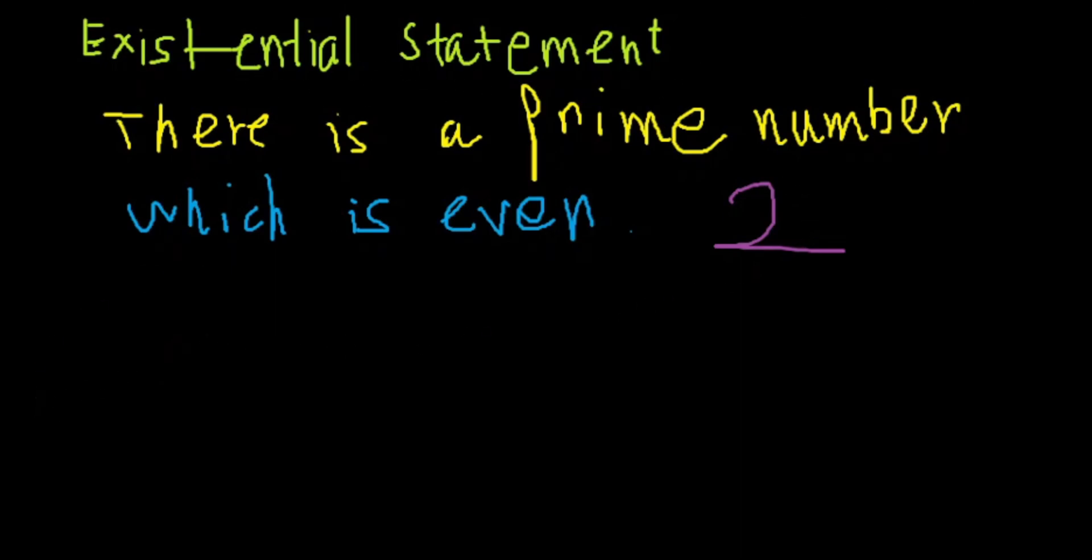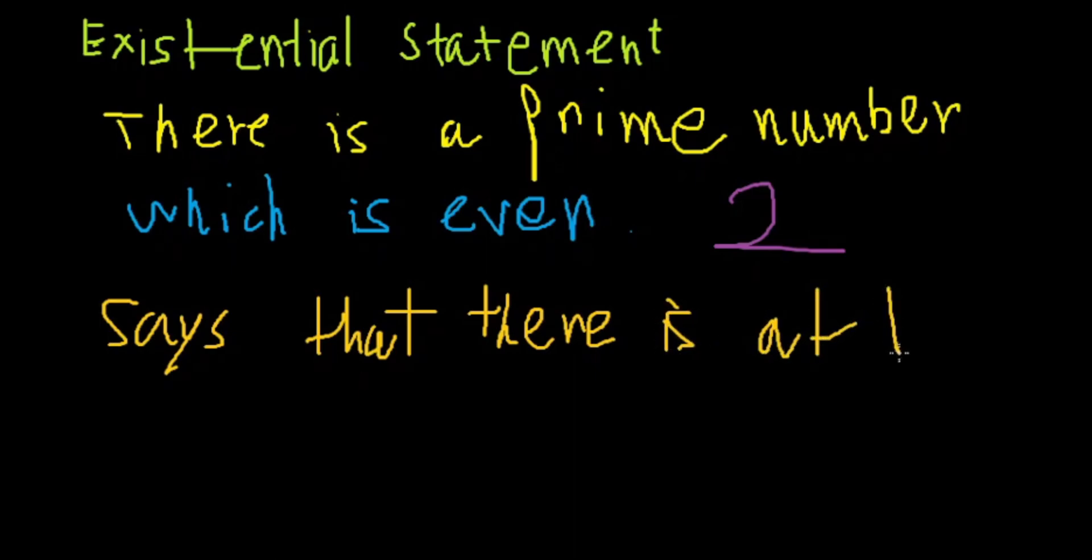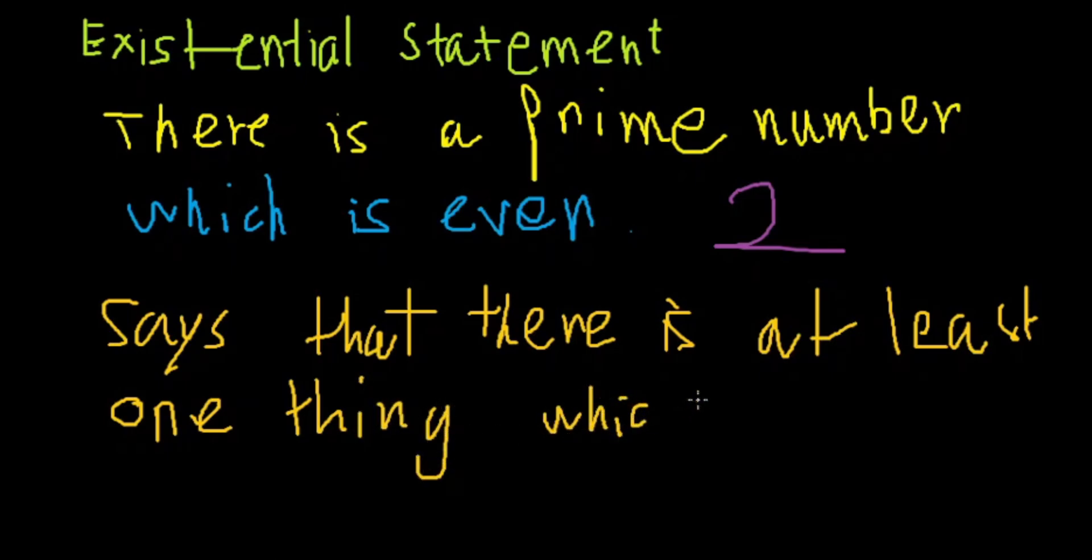Existential statements say that there is at least one thing which is true for a given property.